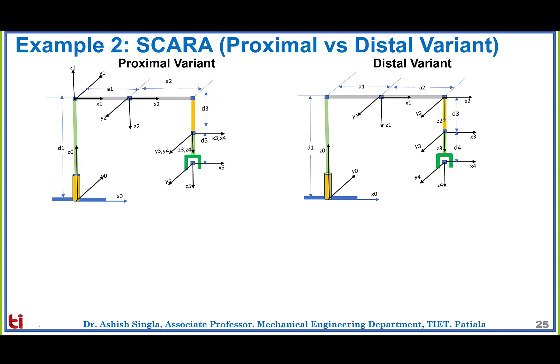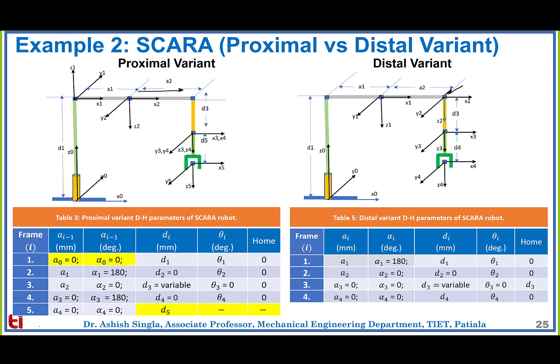Now let's compare the proximal and distal variants. In the proximal variant, for link 2 the frame 2 is assigned at the base of the link, whereas in the distal variant frame 2 is assigned at the far distal end. The distal variant has no fifth row because there is one frame less. Parameters A0 and alpha0 will not be there, and D5 in the proximal variant corresponds to D4 in the distal variant. All other parameters remain the same.